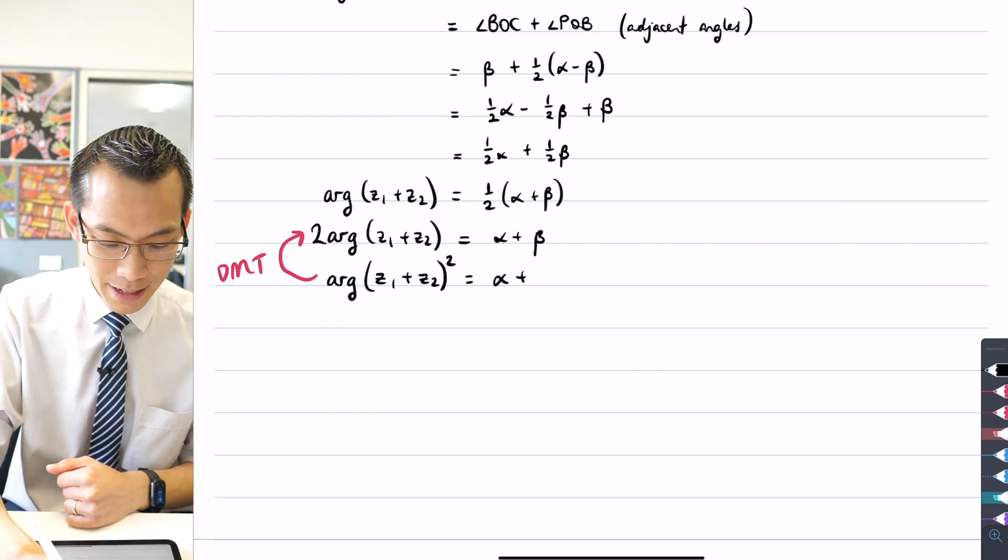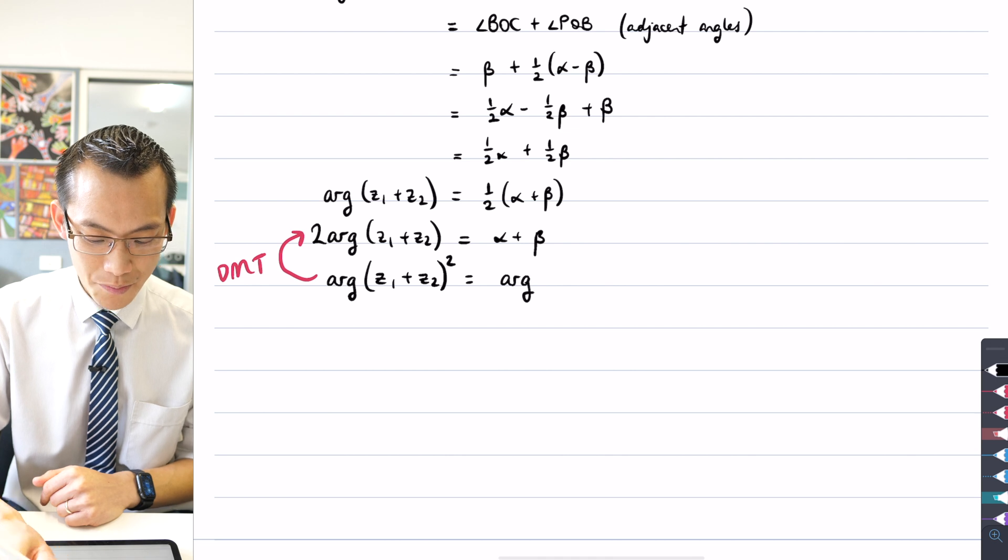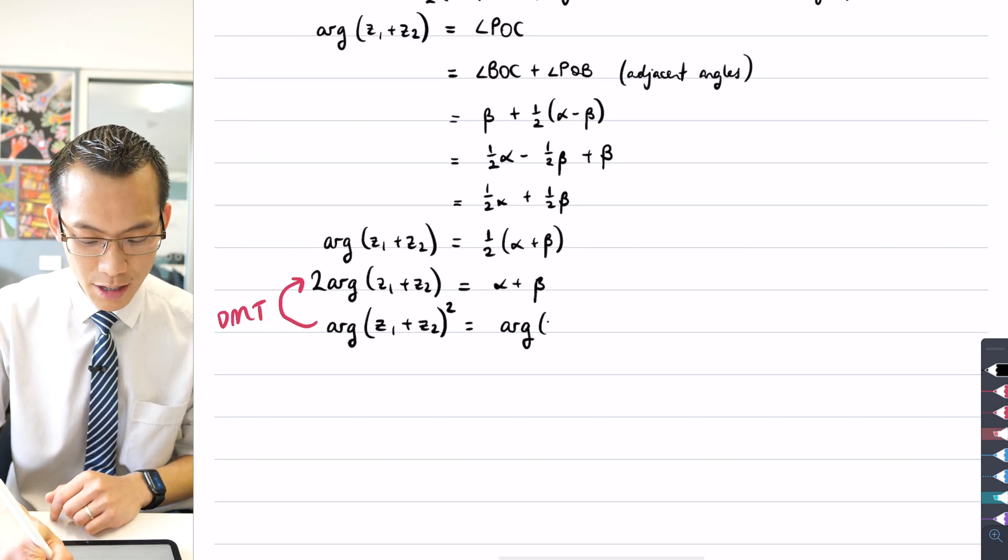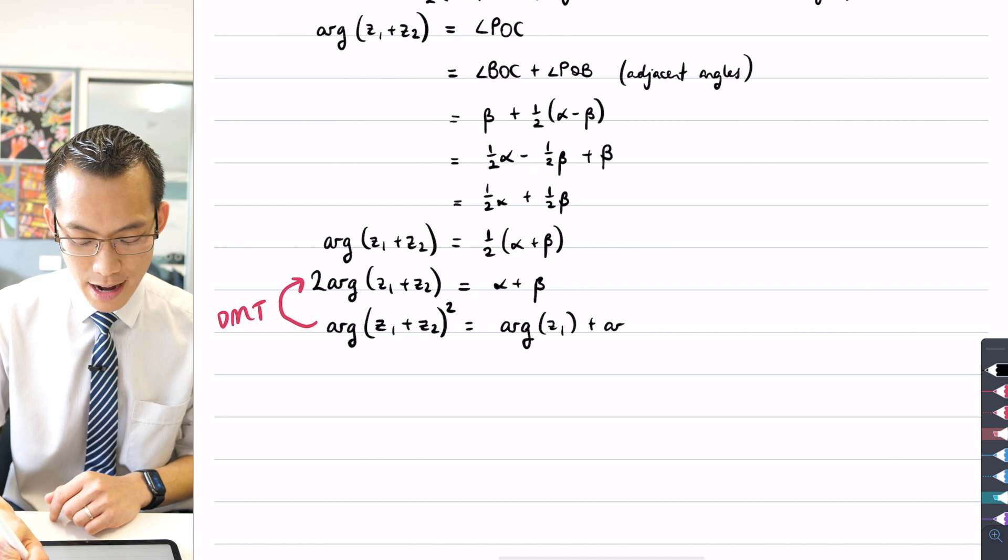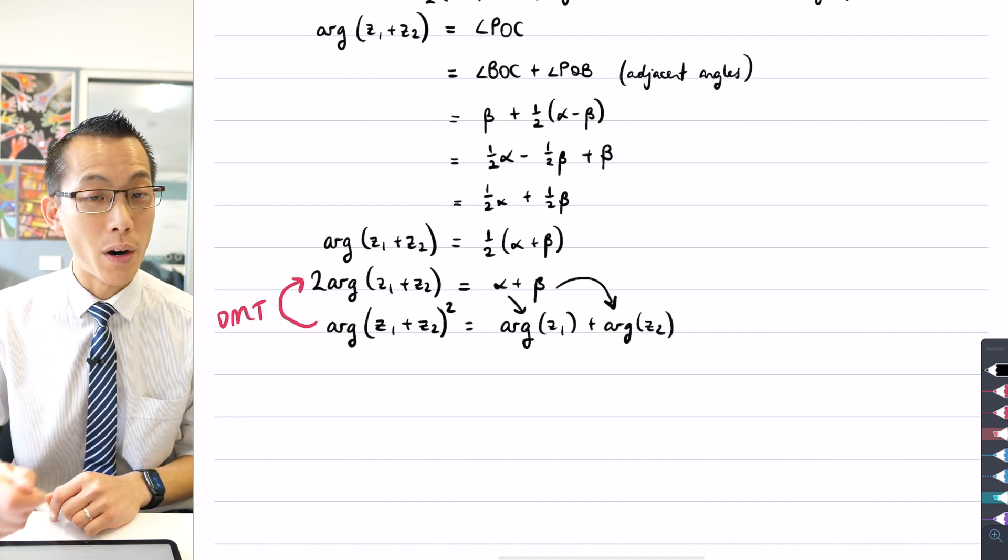So that's alpha plus beta. But I can then further say, this is actually also what happens when you have alpha plus beta being the argument of Z1 plus the argument of Z2. That's what alpha is and that's what beta is.